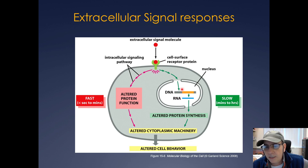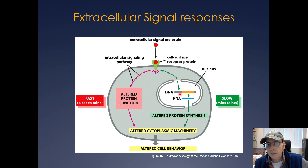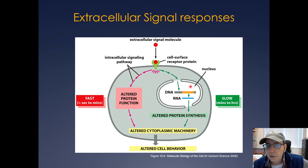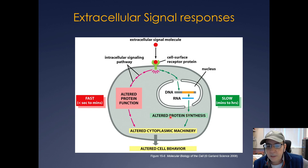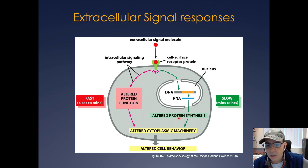Changes in protein function can be relatively immediate, whereas changes in gene expression require assembling the pre-initiation complex, going through initiation, elongation, termination, mRNA processing, mRNA transport out of the nucleus, and then the entire translation process and protein folding in order to get the protein synthesized.